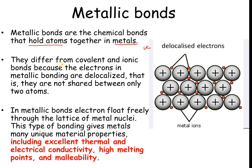Metallic bonding is different from covalent and ionic bonding because the electrons are delocalized — the valence electrons are still moving throughout the metal and are not shared between two specific atoms. The electrons have not completely left the metal, so it is not covalent bonding. Since there is no metal paired with a non-metal, it is not ionic bonding either. It is a completely different type: metallic bonding.